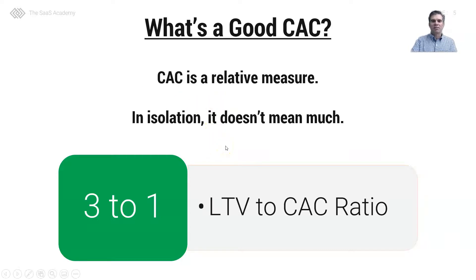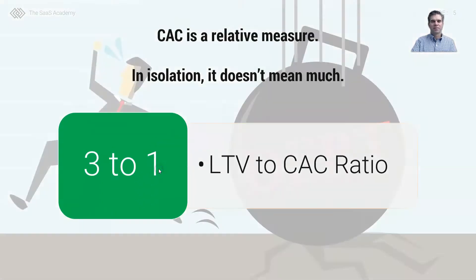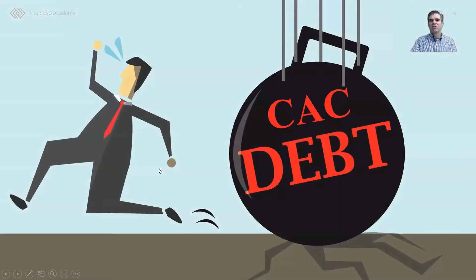A good CAC typically comes in the form of an LTV to CAC ratio. An LTV to CAC ratio of 3:1 or better is considered good. Be sure to check out saascfo.com to see why I compare CAC to debt.